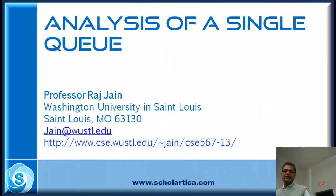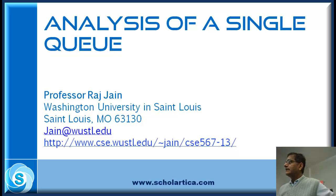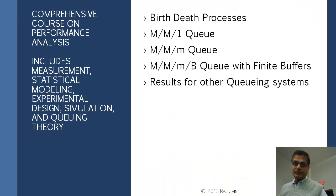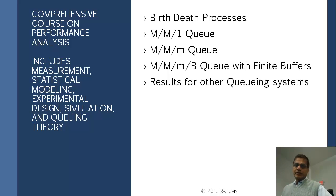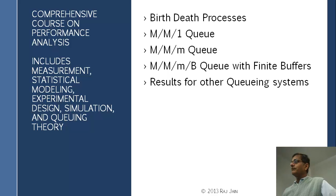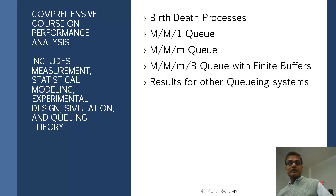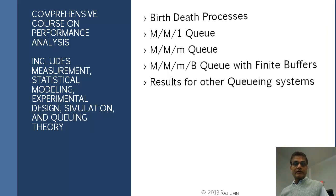In this chapter, we analyze a very simple thing, which is a single queue, and in the next few chapters, we'll move on to networks of queues. We start with the processes again, as we saw, and then apply them to analyze MM1Q, MMM queues. The book also has MMB queues and other queue systems, but we won't be covering those in class. We'll just do MM1Q here, and you can apply the same methodology to others, which I'd expect you to read.